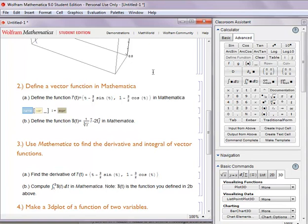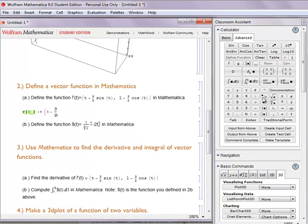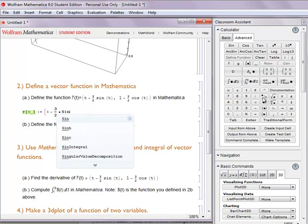and we want this function to be r of t. And for the expression here, remember that vectors are entered in Mathematica with curly brackets. So this is going to be t minus 3/2 times sine of t.